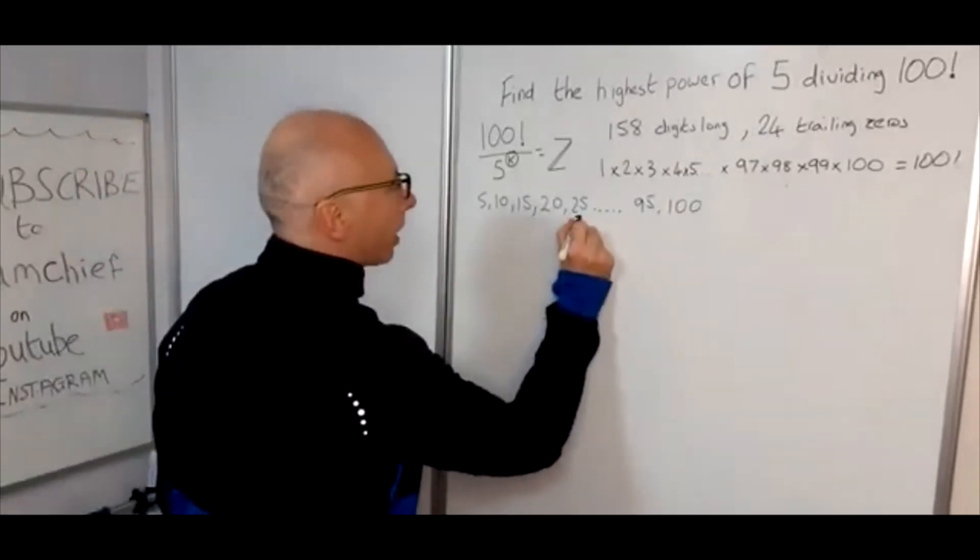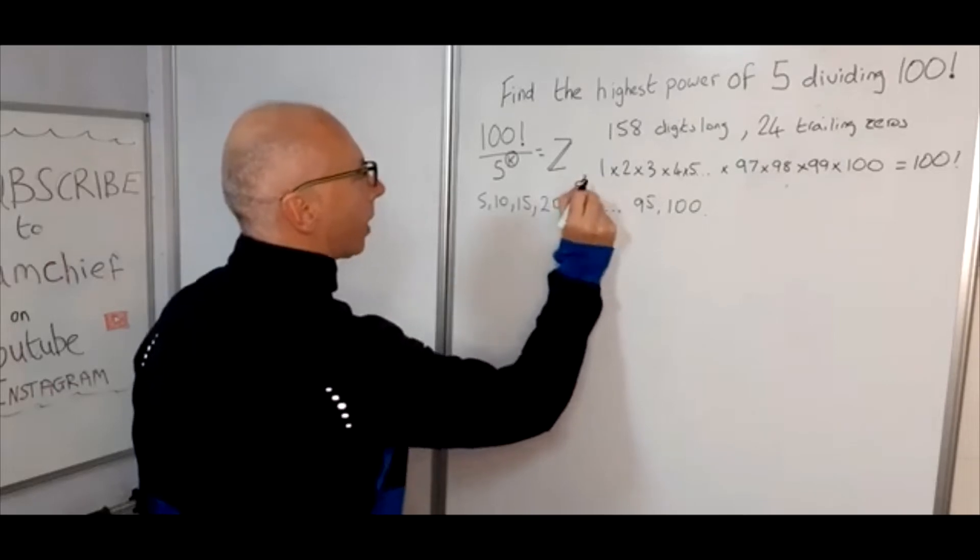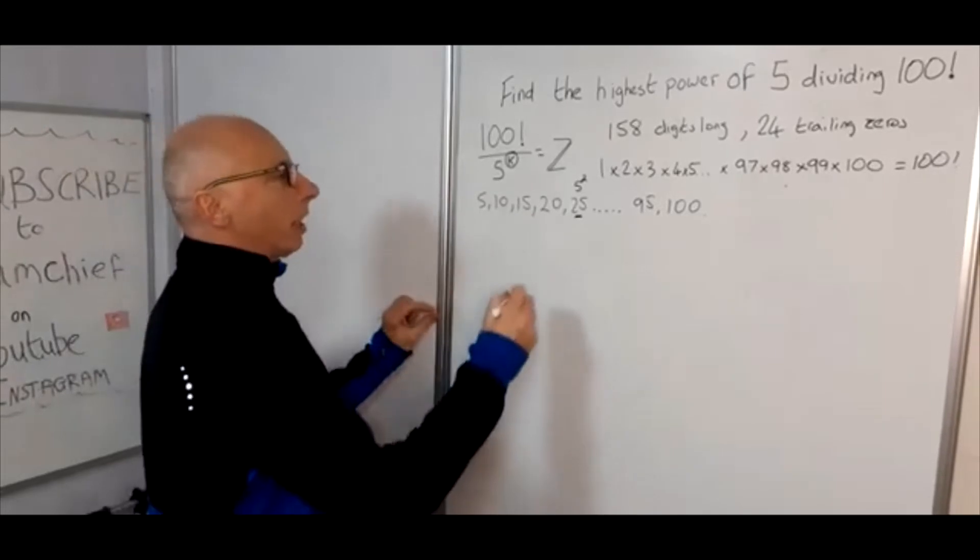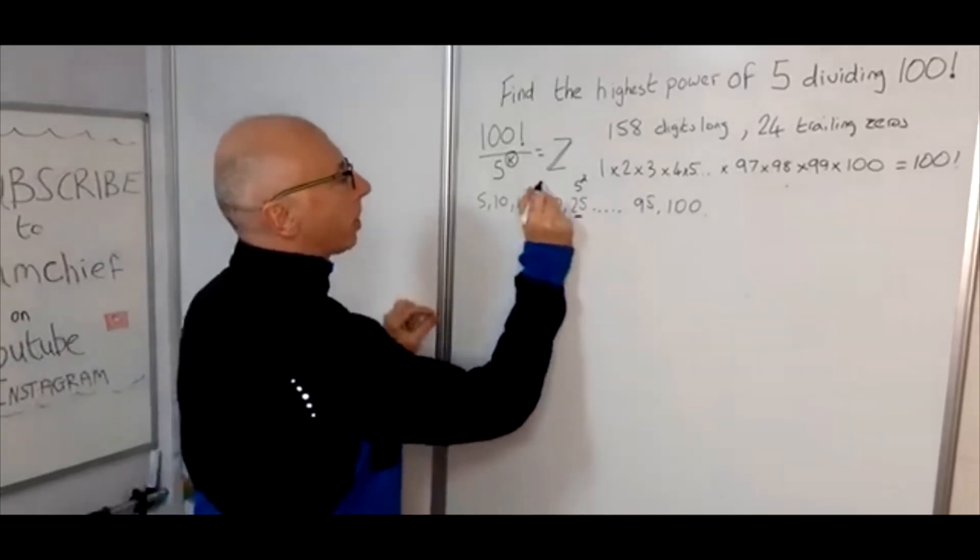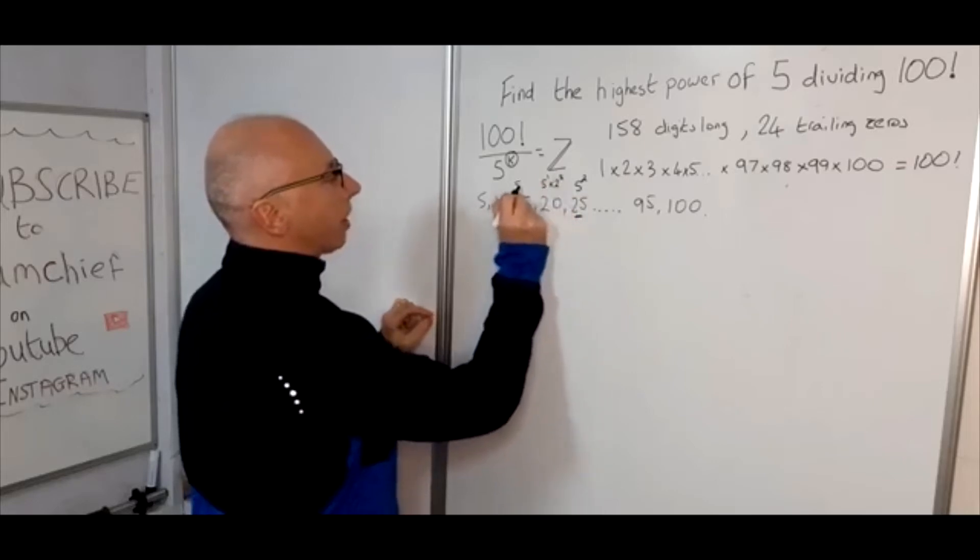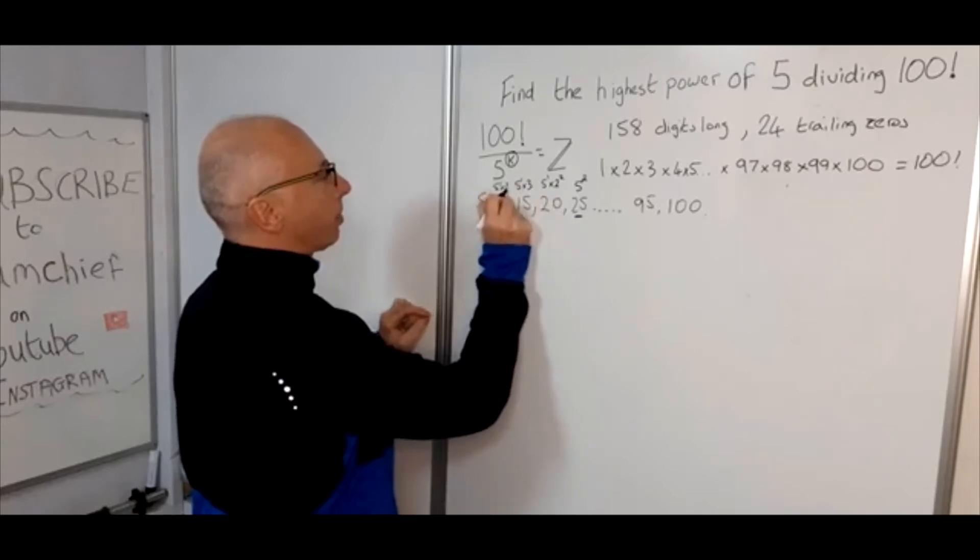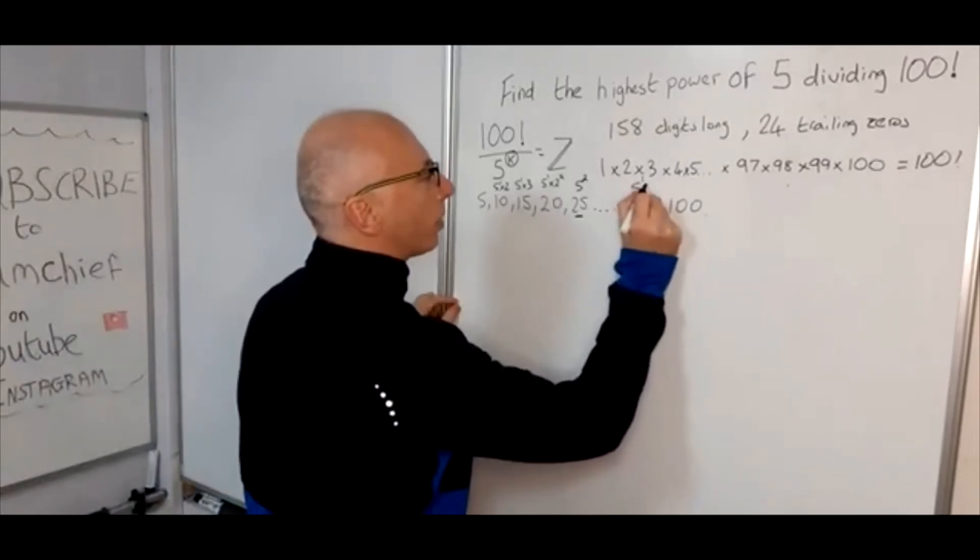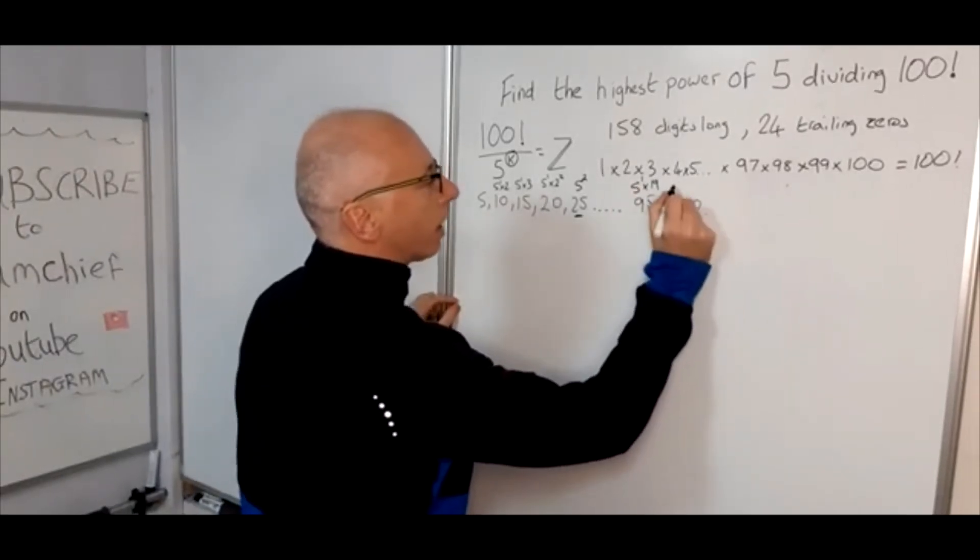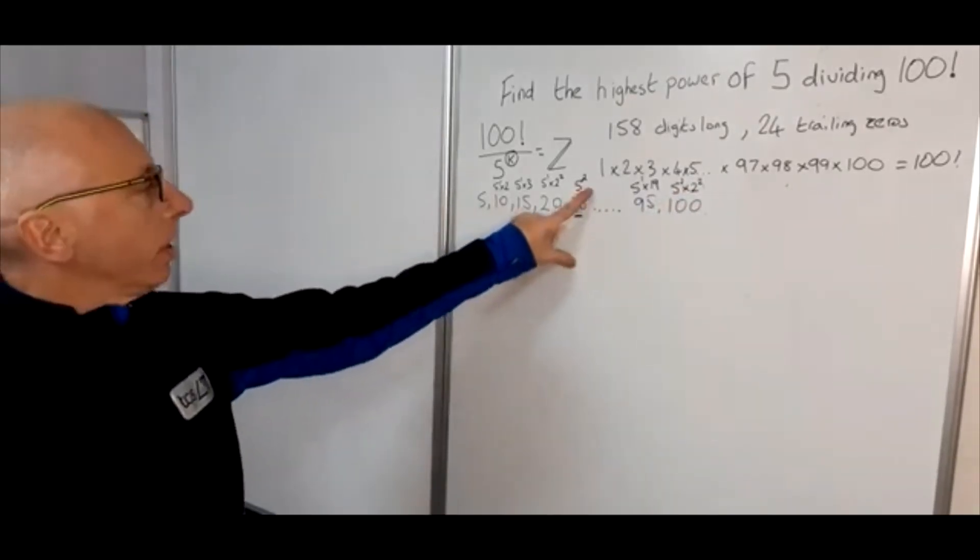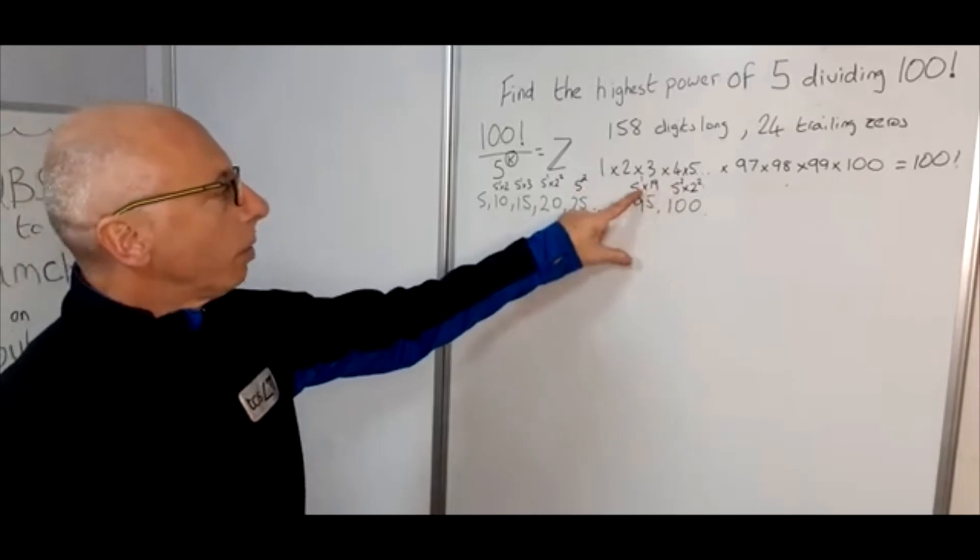Now interesting to see here is 25 is 5 squared, whereas these ones here, their prime factorisation, this one would be 5 to the power of 1 times 2 squared. This one here is 5 to the 1 times 3, and this is 5 to the 1 times 2 and so on. This one here would be 5 to the power of 1 times 19, and this would be 5 squared times 2 squared. So we've got some 5's that appear twice and some 5's that only appear once.